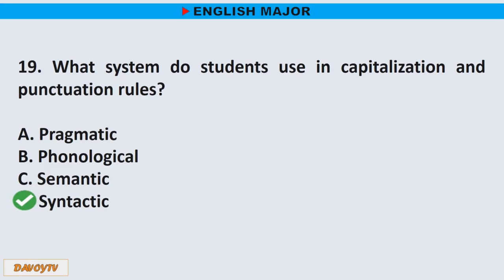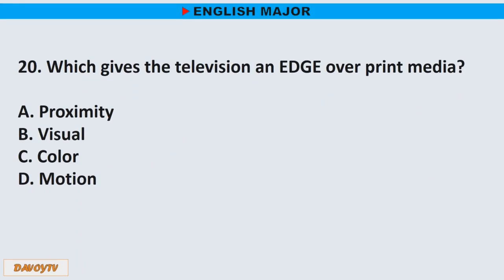Question number 20. Which gives television an edge over print media? A. Proximity. B. Visual. C. Color. D. Motion. The correct answer is letter D. Motion.